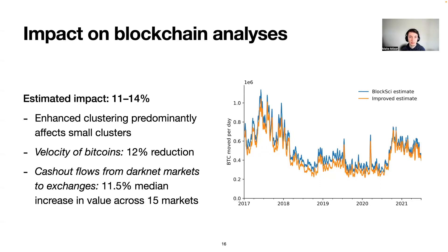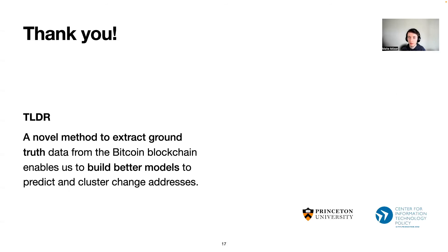Finally, we looked at the impact of this enhanced clustering on different types of blockchain analysis. We found that with our conservative clustering there is an estimated impact of 11 to 14 percent. That number might seem small, but it comes primarily because our enhanced clustering predominantly affected smaller clusters, and if we detect more aggressively, that number could change. With this, I'm at the end of my presentation. Thank you very much — if you find this interesting, please read our paper and I'm happy to answer questions.